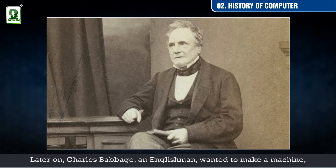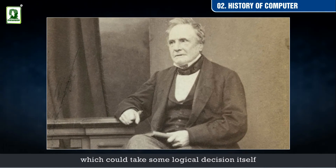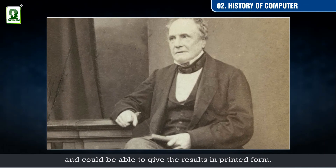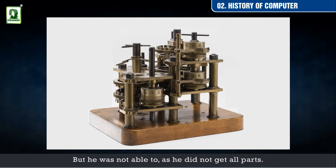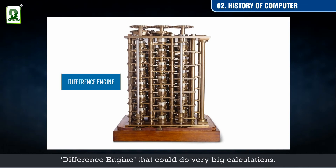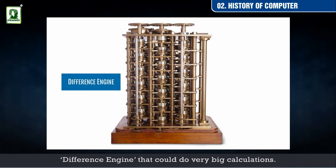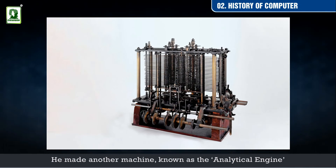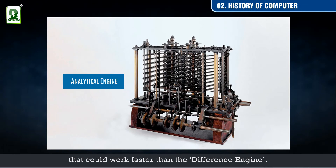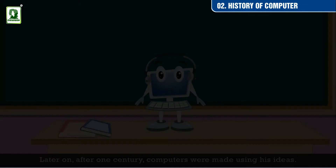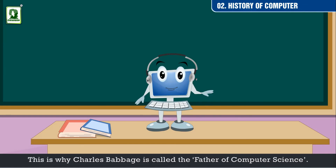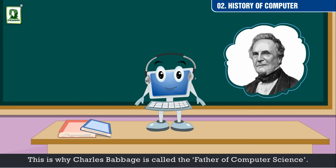Later on, Charles Babbage, an Englishman, wanted to make a machine which could take some logical decisions itself and could give results in printed form. But he was not able to, as he did not get all the parts. Then he designed a machine called the difference engine, that could do very big calculations. He made another machine known as the analytical engine, that could work faster than the difference engine. After one century, computers were made using his ideas. This is why Charles Babbage is called the father of computer science.